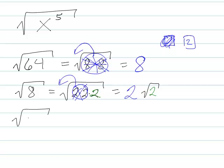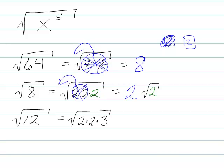What about the square root of 12? You can say, if I factor that out, that's 2 times 2 times 3. Here's a pair of 2's — that'll come out. And then I'm left with this 3 here, and it stays inside. So that's kind of how this process works.